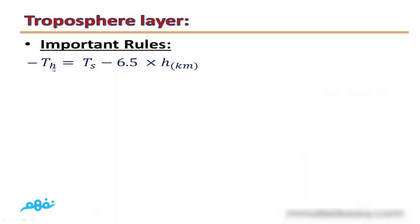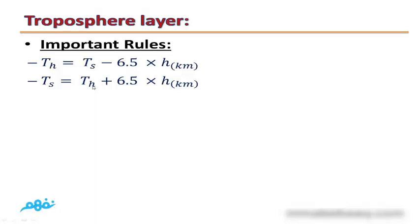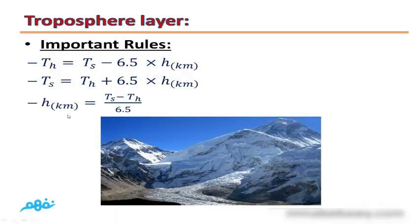To calculate the temperature at a certain height, such as a mountaintop: Temperature at top = Temperature at sea level − (6.5 × height in km). To find the temperature at the bottom from the top: Temperature at bottom = Temperature at top + (6.5 × height in km). To find the height: Height = (Temperature at bottom − Temperature at top) ÷ 6.5.